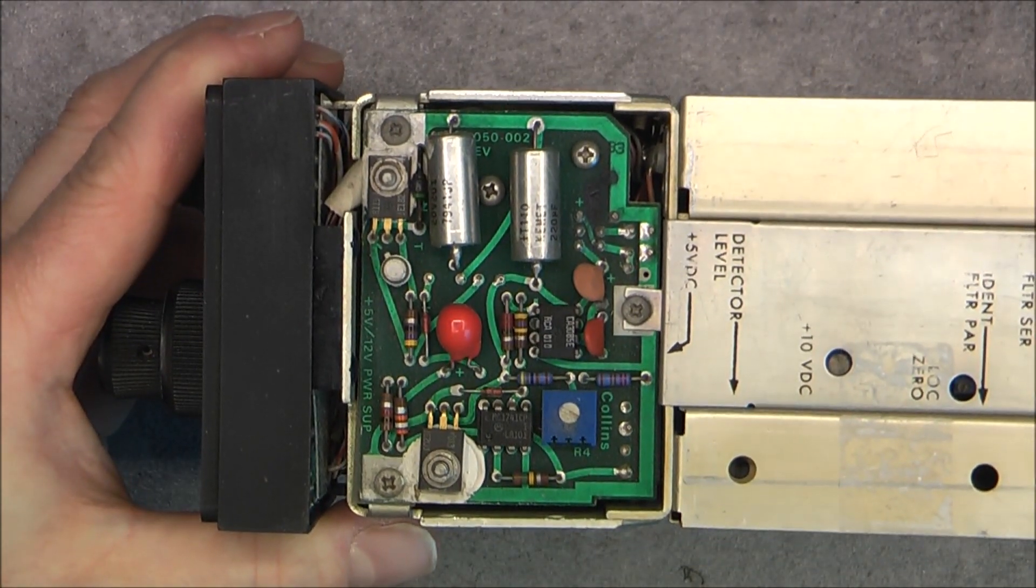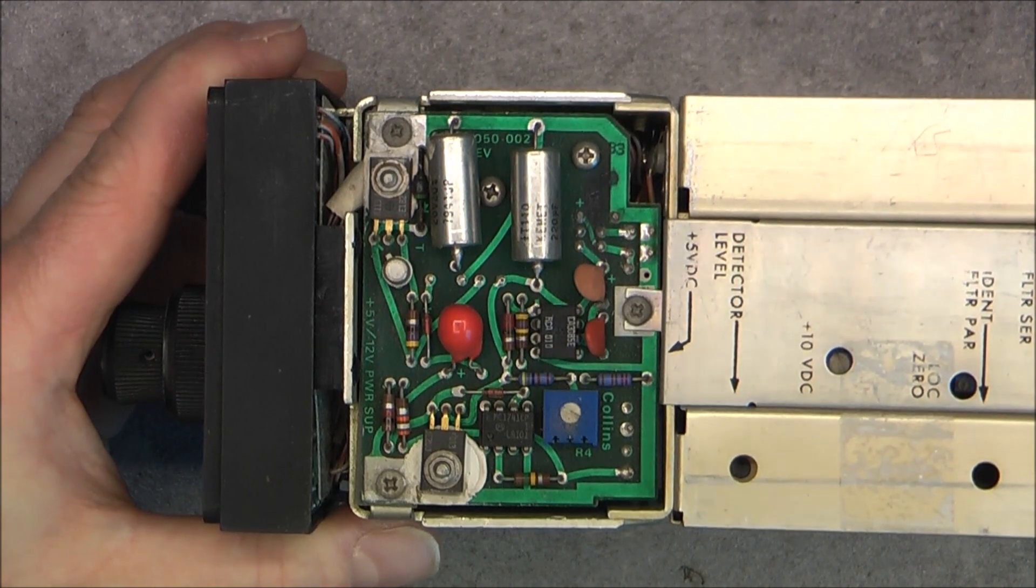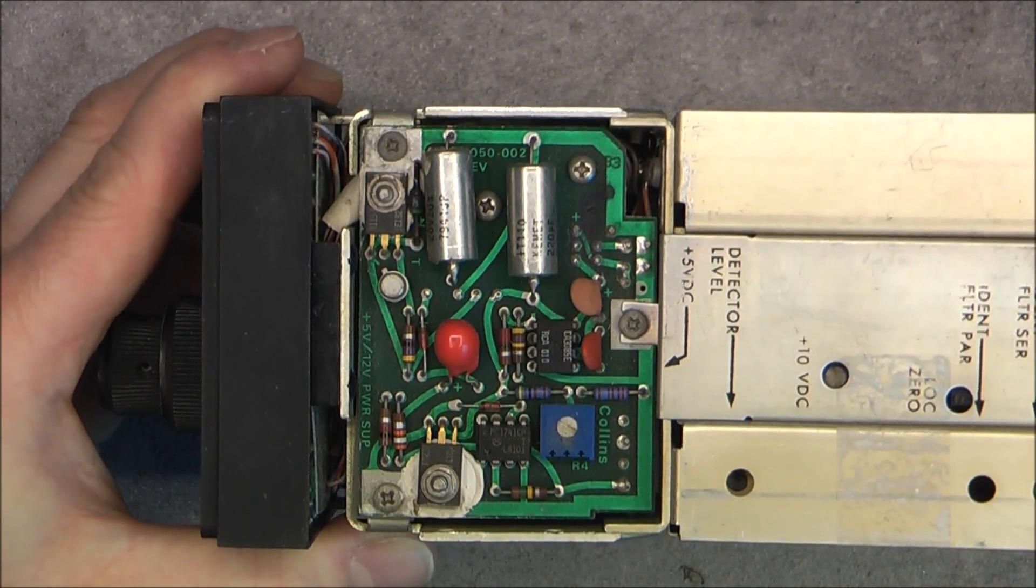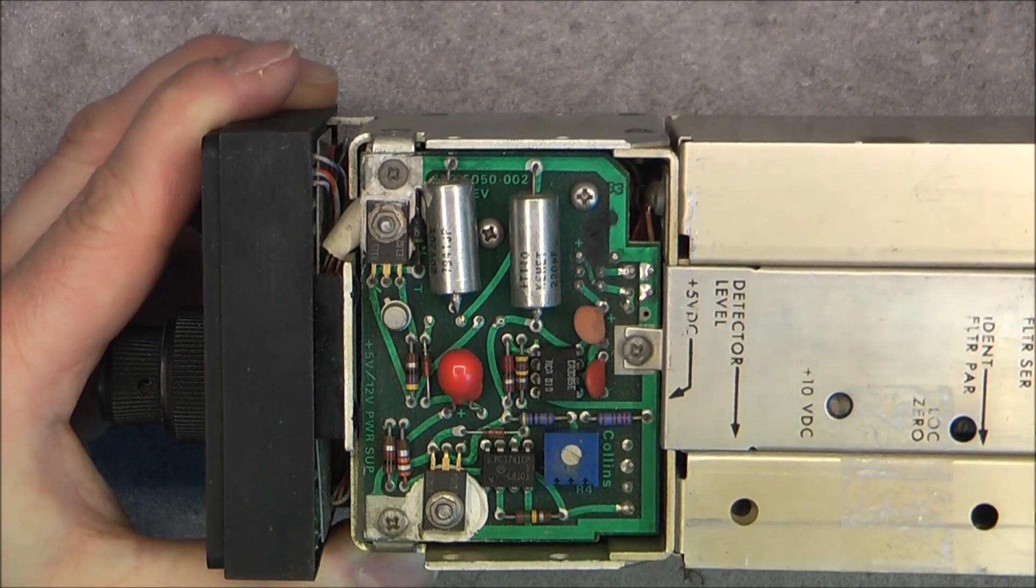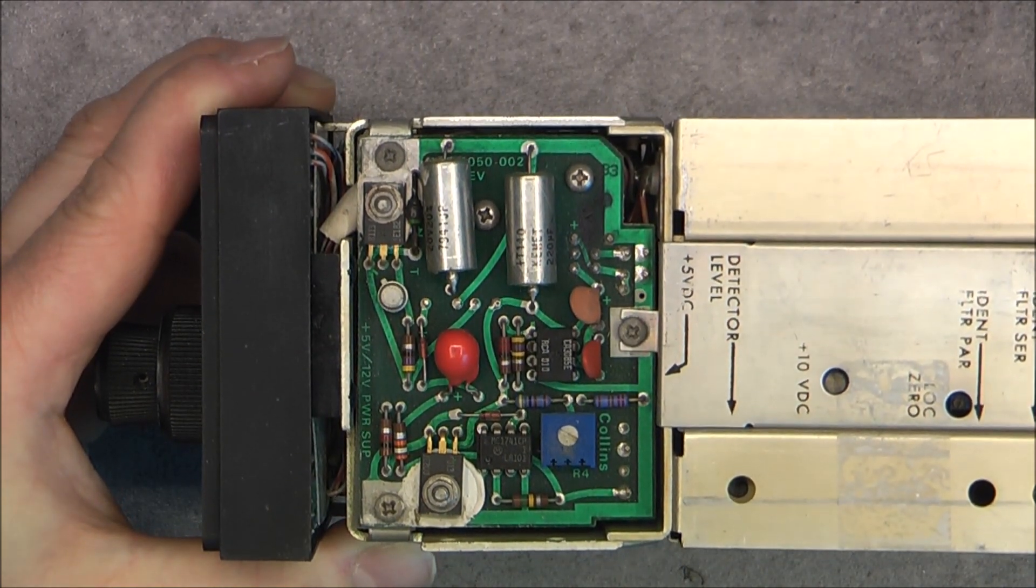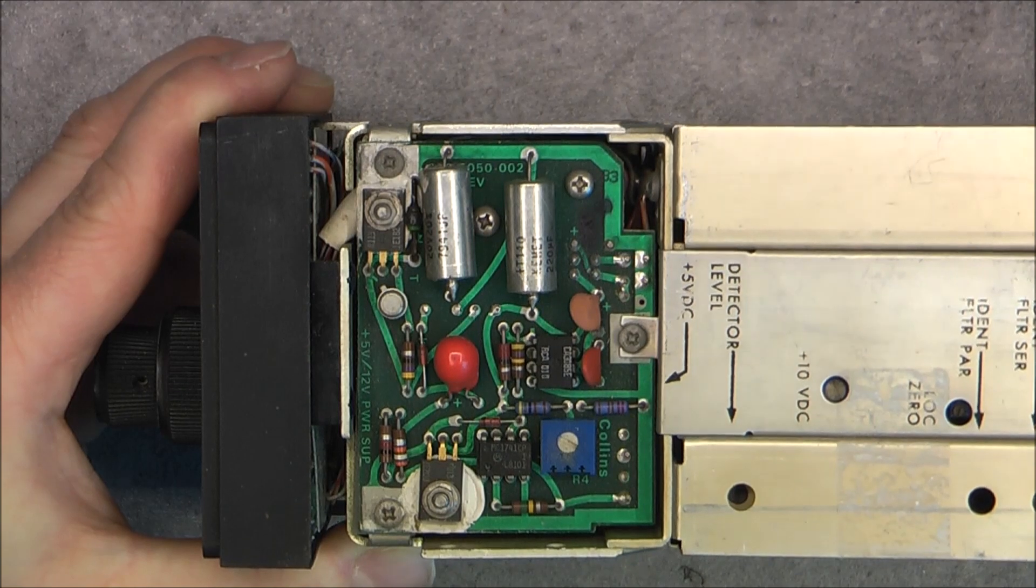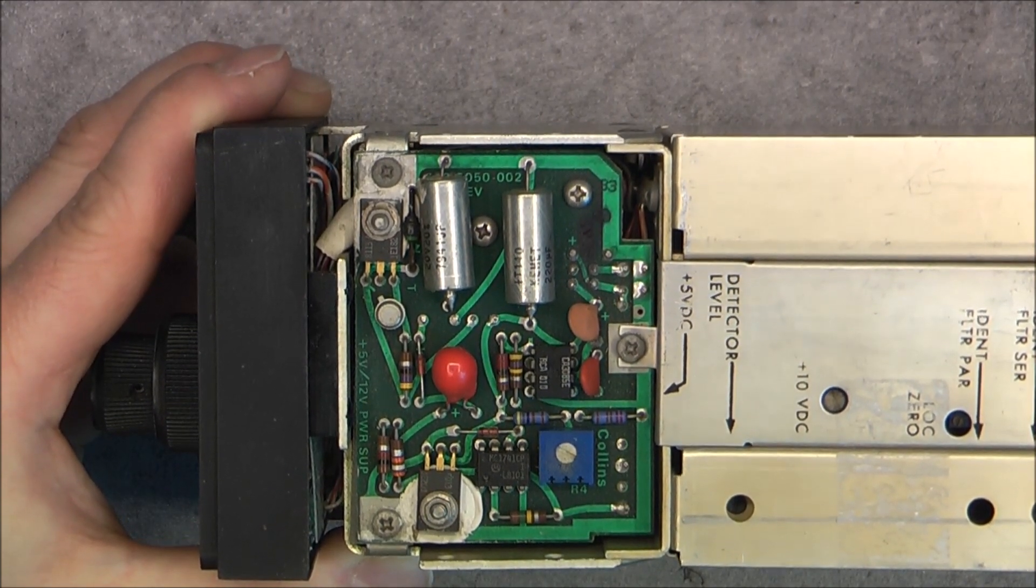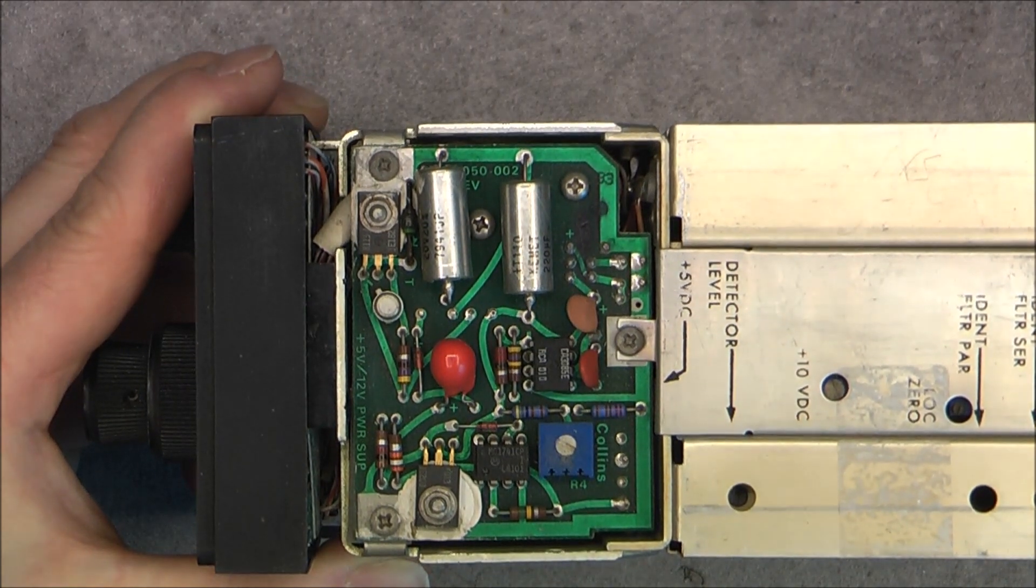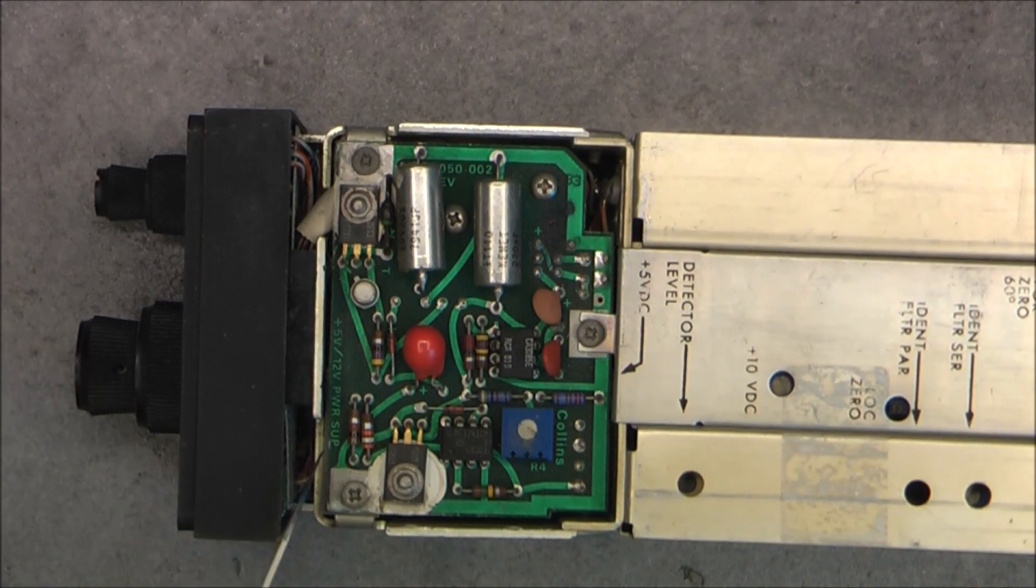So first, view at the electronics. Kemet, seal capacitors. Old school RCA chips. Motorola, trim pot. And it is the power supply converter apparently this board as it is written right here.